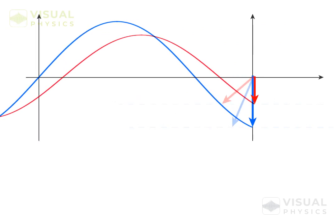And graphically, current will be shifted towards the right by a phase of Φ.